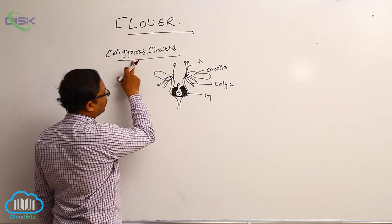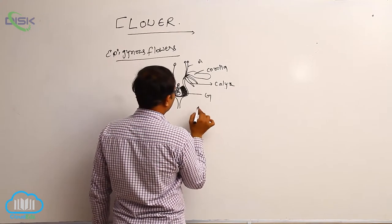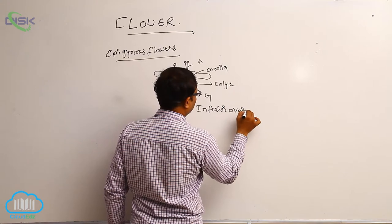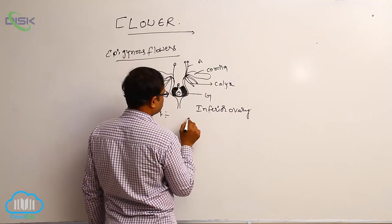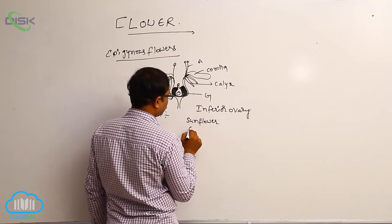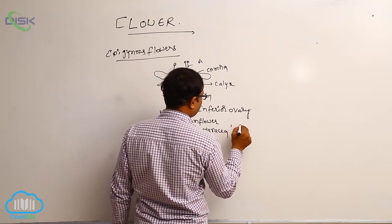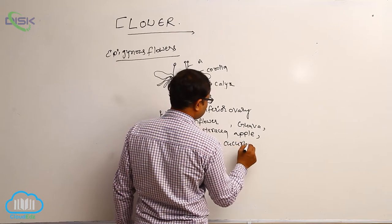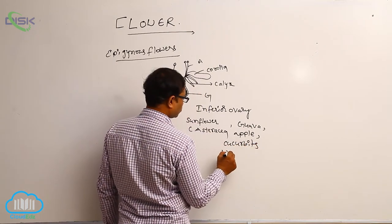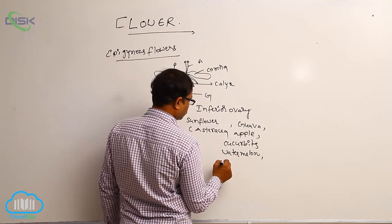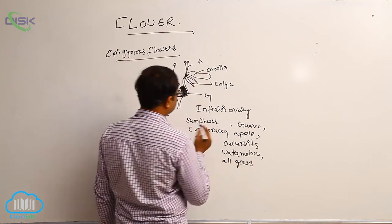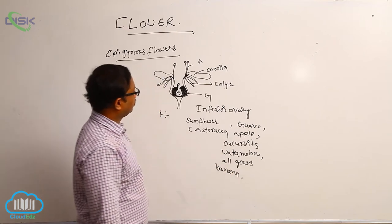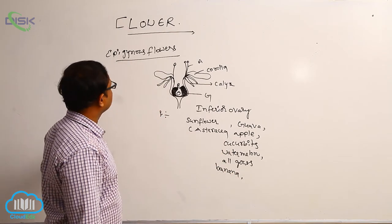This type of flower is known as epigynous flower. In an epigynous flower, the ovary is an inferior ovary. Examples of epigynous flowers include sunflower (belonging to the Asteraceae family), guava, apple, cucurbits such as pumpkin, watermelon, bottle gourd, and also Musa — banana. All these are examples of inferior ovary. That is known as epigynous flower.